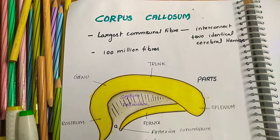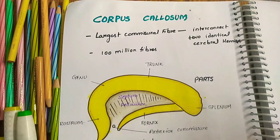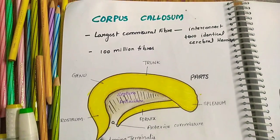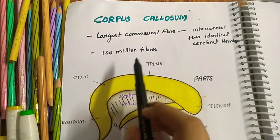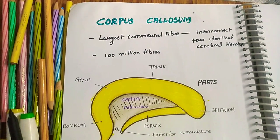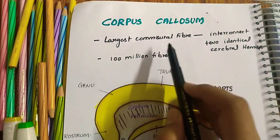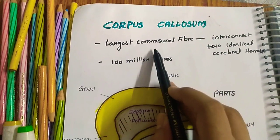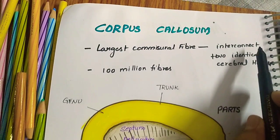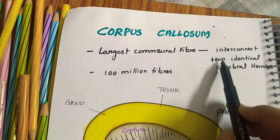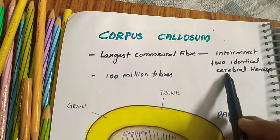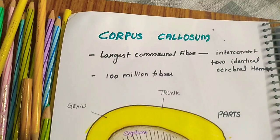Corpus callosum. The corpus callosum is the largest commissure of the brain. What is a commissure? The commissure is the interconnection between two identical cerebral hemispheres.